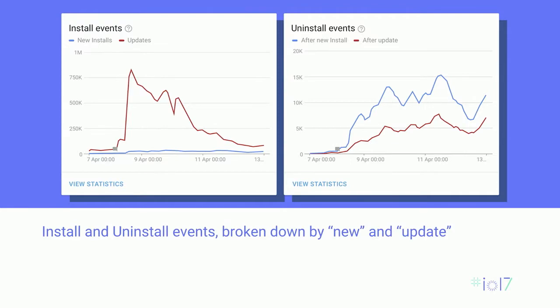But what if you could also see low latency install and uninstall events that are specific to your release? And what if you could know how many uninstalls came from updated devices? Are you losing existing customers because your new version doesn't perform? Installs broken down by new installs and updates can tell a powerful story too. Have enough users updated for me to push my staged rollout to the next stage?